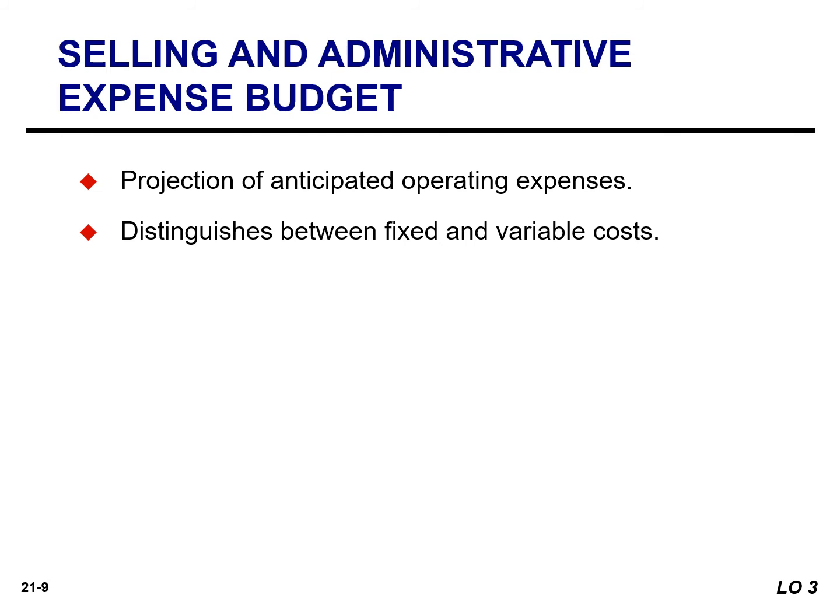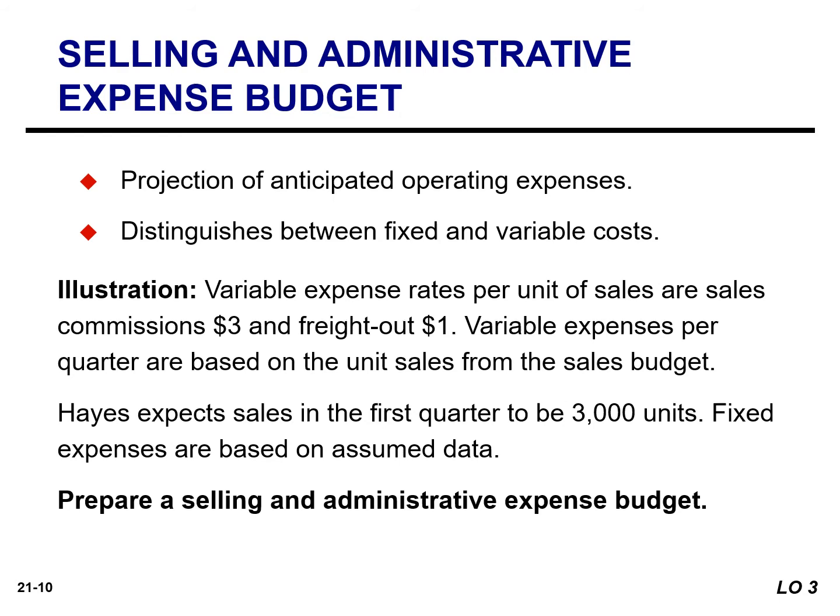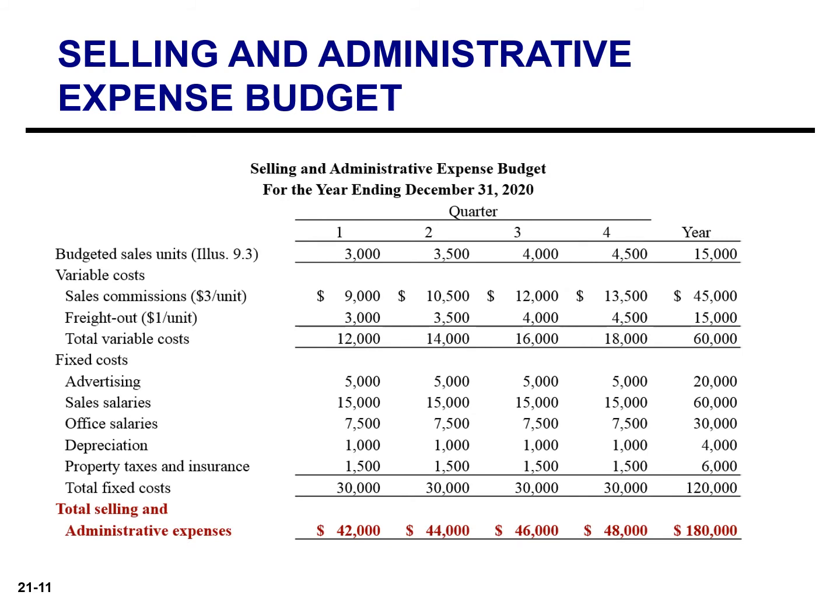This budget projects anticipated selling and administrative expenses for the budget period and classifies expenses as either variable or fixed. The variable expense rates per unit of sales are sales commissions of $3 and freight out of $1. For example, Hayes expects sales in the first quarter to be 3,000 units, so sales commission expense is $9,000 (3,000 units times $3), and freight out is $3,000 (3,000 units times $1). Fixed expenses are based on assumed data.